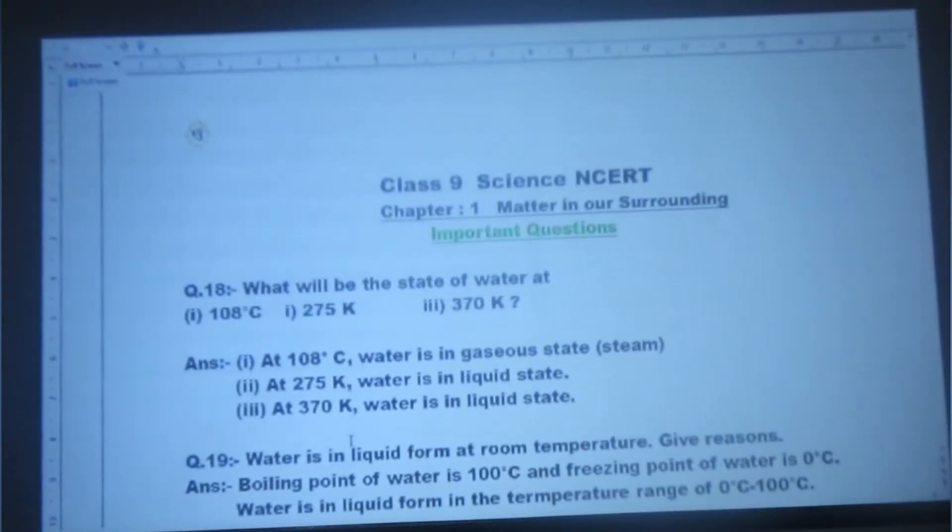What will be the state of water at: first, 108 degree Celsius; second, 275 Kelvin; third, 370 Kelvin? Answer: At 108 degree Celsius, water is in gaseous state. At 275 Kelvin, water is in liquid state. At 370 Kelvin, water is in liquid state.